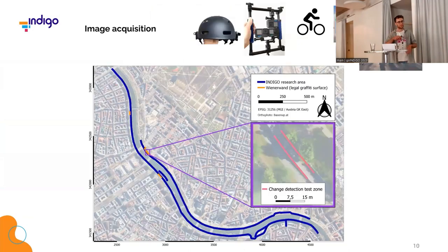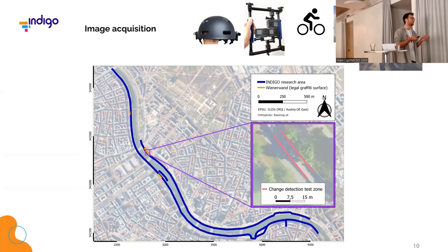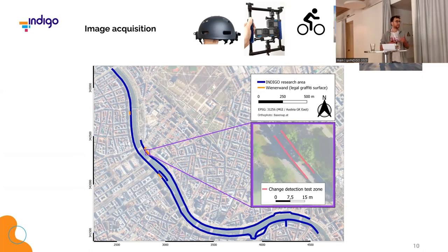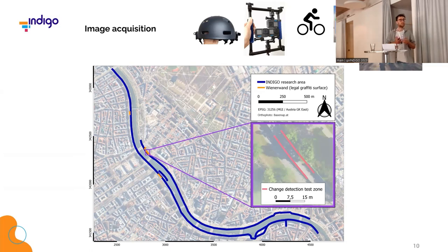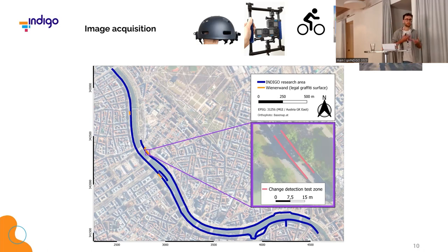To solve all these problems we came up with a sophisticated workflow. This starts with image acquisition. As you may know, the Danube Canal is quite long — 13 kilometers of walls and approximately 8 kilometers of other sites. For now we actually concentrate on a smaller test site at one of the legal walls. Everything in the coming minutes will focus on this small part where we test all the algorithms, and then we can upscale to the whole canal once workflows are proven.